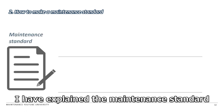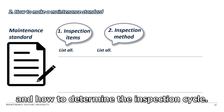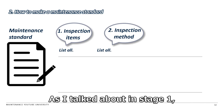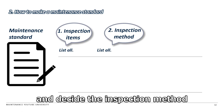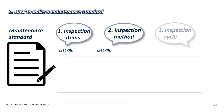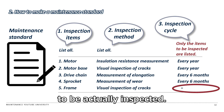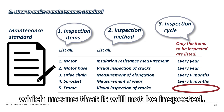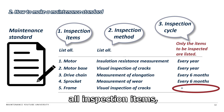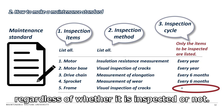As mentioned above, I have explained maintenance standard inspection items, inspection method, and how to determine the inspection cycle. We identified all inspection items in Steps 1 to 4, and decided the inspection method for all inspection items. However, the inspection cycle is set only for the items to be actually inspected. For example, the inspection cycle of the frame is not stated, which means it will not be inspected. By doing this, the maintenance standard covers all inspection items, so you can understand the equipment configuration regardless of whether it is inspected or not.